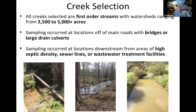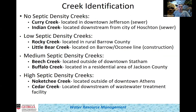I grouped the creeks by septic density. No septic tank density creeks — such as Curry and Indian Creek — are on sewers or downstream of sewered cities. Low density creeks — Rocky and Little Bear — are in the most rural areas. Medium density creeks are half rural, half residential, with some flowing through or behind neighborhoods. High density creeks flow through multiple neighborhoods or are located near large cities, like Nocatchee Creek near downtown Athens, or Cedar Creek, which is downstream of a massive wastewater treatment plant.